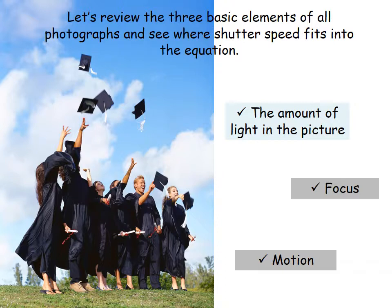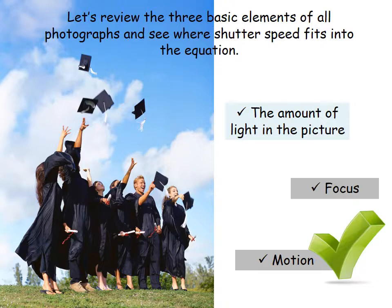Let's review the three basic elements of all photographs and see where shutter speed fits in. First, the amount of light — we just talked about how leaving your shutter open longer gives you more light. Last week we covered focus, and how selecting different apertures changes the depth of field. The last element was motion, and we haven't found an exposure control that handles motion yet — but that's shutter speed. That's exactly what shutter speed does.